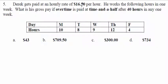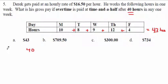Derek gets paid $16.50 per hour — that's dollars per hour, a rate. He works the following hours. What's his gross pay if overtime is paid time and a half after 40 hours in a week? Adding the hours: 8 and 12 is 20, plus 10 is 30, and 9 and 4 makes 13, so that's 43 hours total. Since he worked 43 hours, he gets 40 regular and 3 overtime hours.